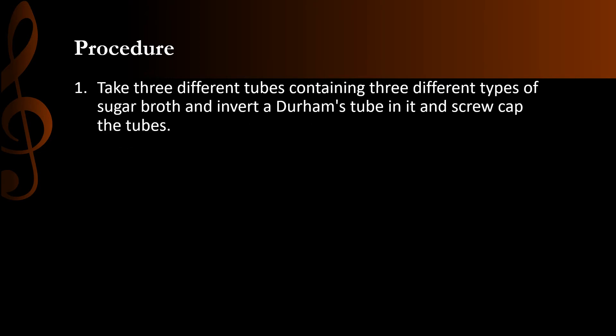The procedure: take three different tubes containing three different types of sugar broth and invert a Durham's tube in each, then screw cap the tubes. Label the three tubes. The Durham's tube should be inverted such that there is no air bubble in it — this is a very important point. If there is any air bubble, you will get false results. So check carefully that there is no air bubble in the Durham's tube, then screw cap the tubes. The three sugar broth tubes are then sterilized by autoclaving.